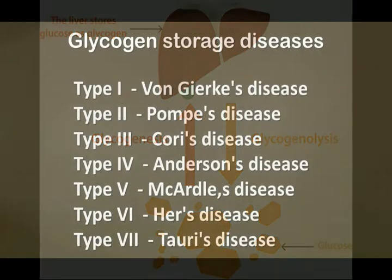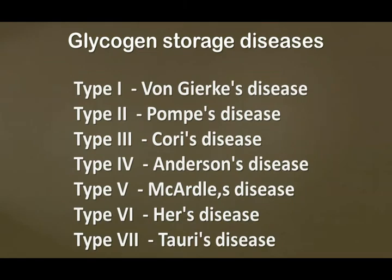There are so many glycogen storage diseases, but the important ones are types one to seven. Type 1 is Von Gierke's disease, type 2 is Pompe's disease, type 3 is Cori's disease, type 4 is Anderson disease, type 5 is McArdle's disease, type 6 is Hers disease, and type 7 is Tarui's disease.